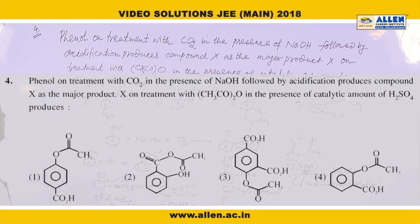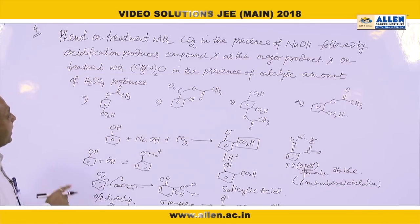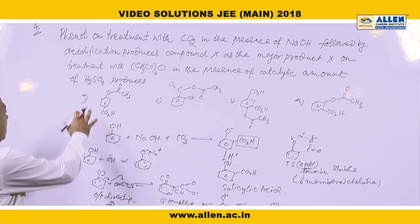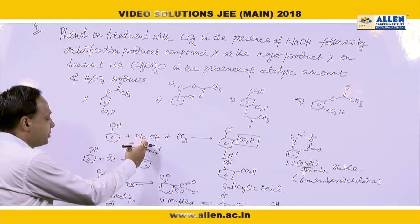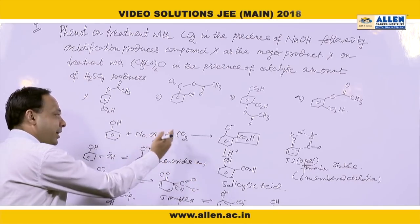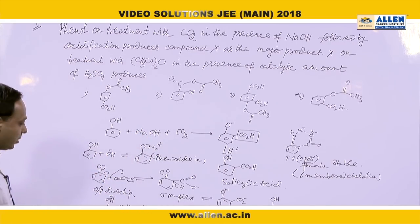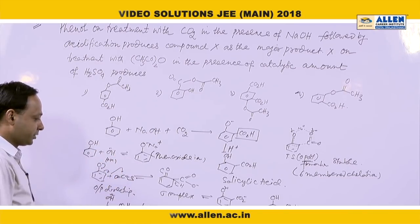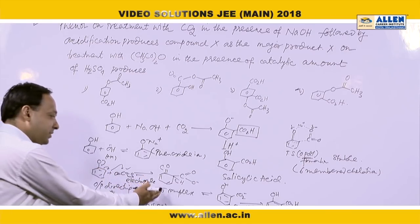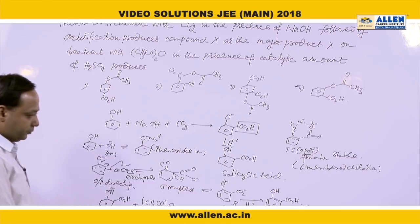Question 4: Phenol on treatment with CO₂ in the presence of NaOH, followed by acidification, produces compound X as the major product. X on treatment with acetic anhydride in the presence of a catalytic amount of acid produces — four options are given. First, phenol in the presence of basic medium NaOH gives phenoxide ion. This phenoxide ion reacts with CO₂; since O⁻ is an ortho-para director due to the +M effect, EAS takes place. CO₂ acts as the electrophile, the ring attacks at ortho positions, a sigma complex is formed, deprotonation occurs, and the ortho product is the major product.